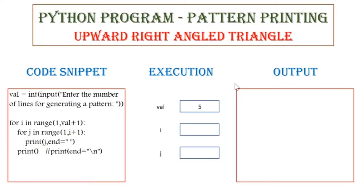Now let me explain in detail how this code works. Say for example, the user has given the input value to be 5. So 5 will be stored in the variable val. And in the outer for loop, we are going to execute for a range of values from 1 to 5, because the range function will consider the value of val to be 4. So we give val plus 1 to consider the range of values till 5.